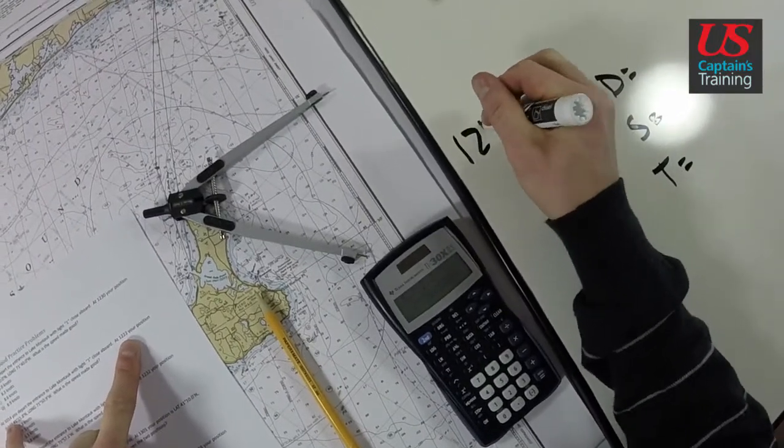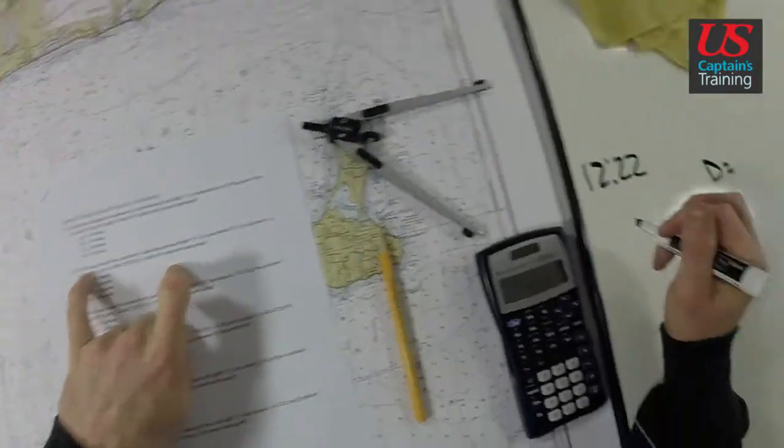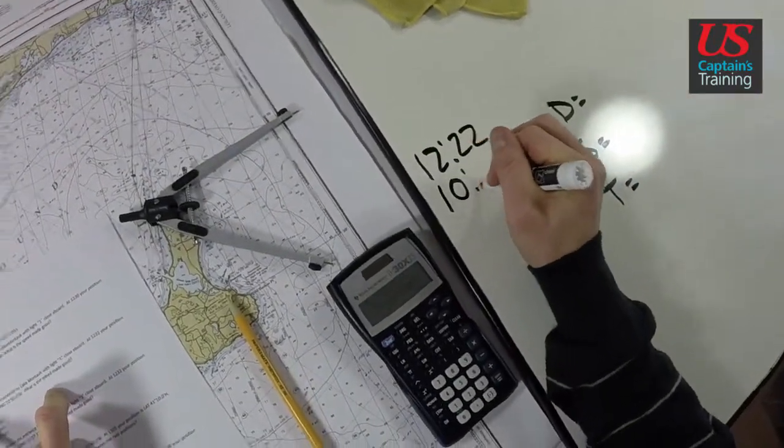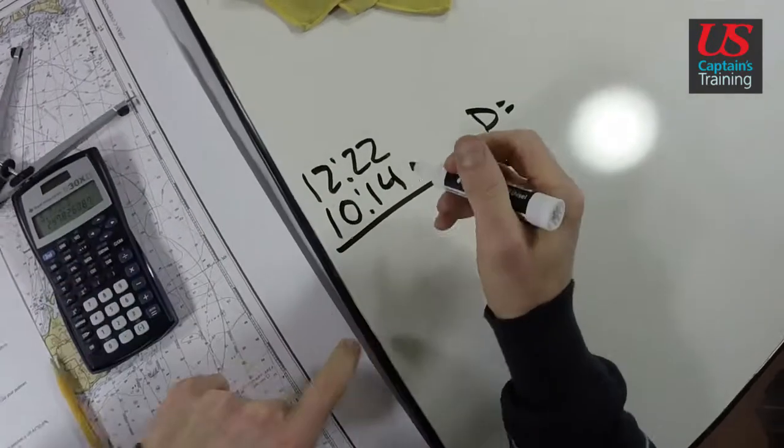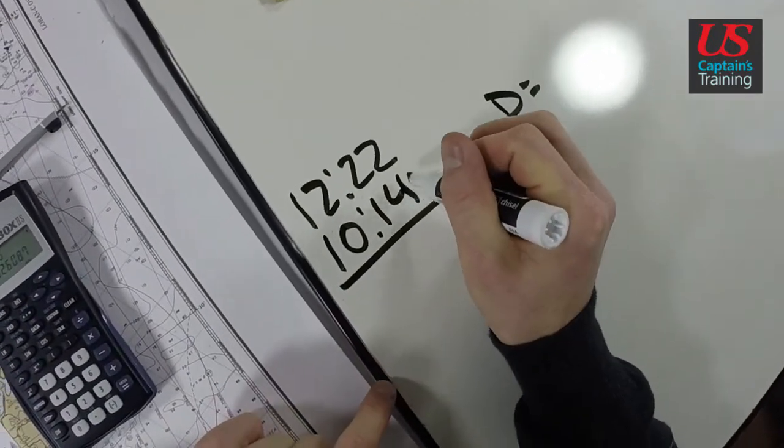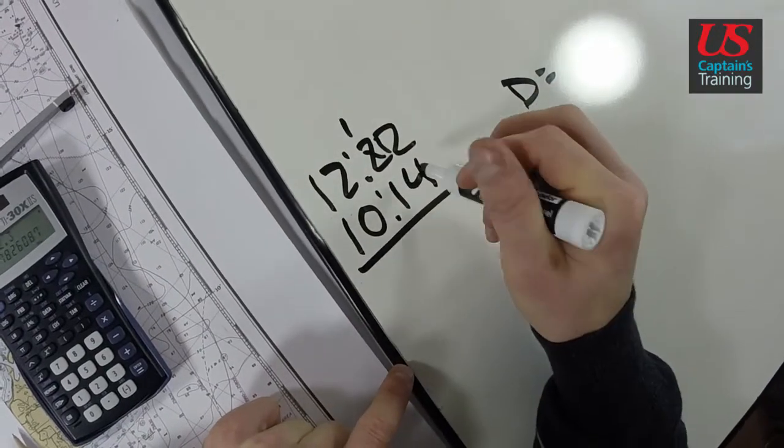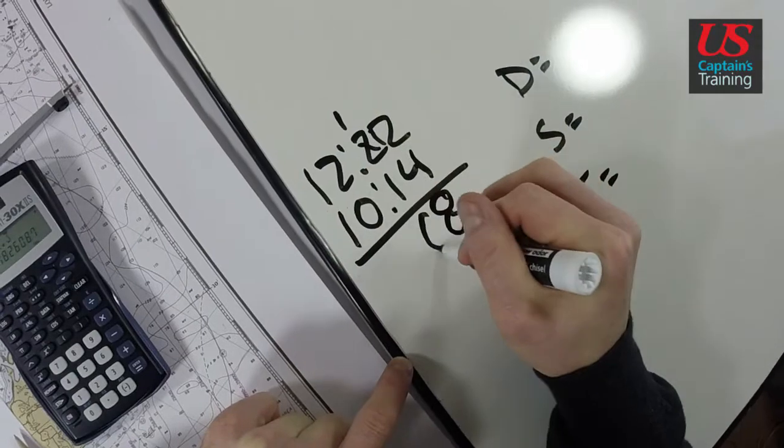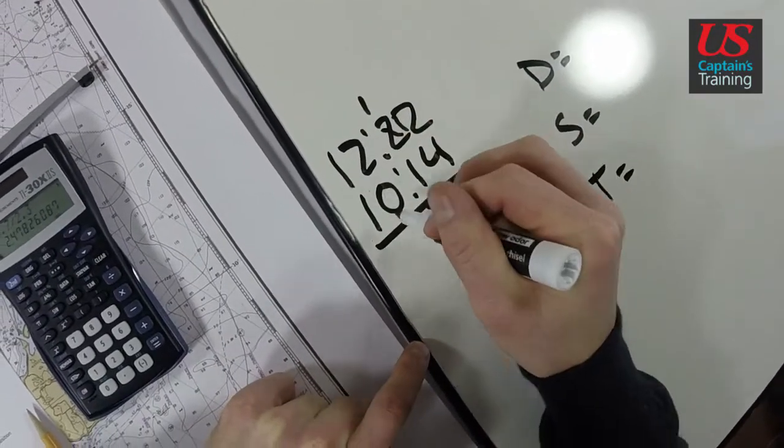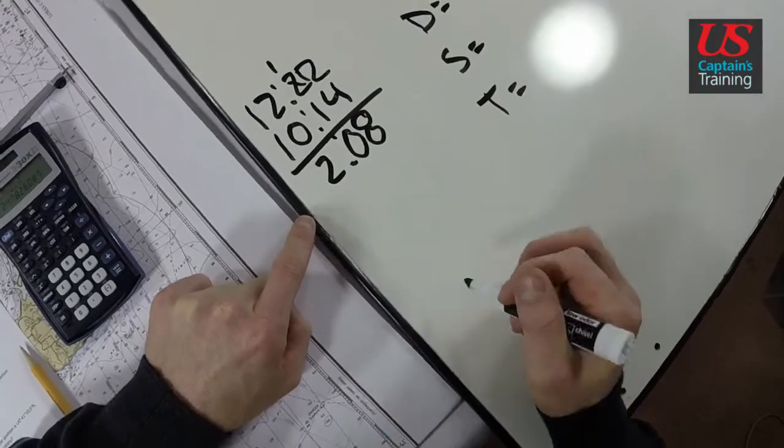So 1222, 12 hours 22 minutes, minus 1014, 10 hours 14 minutes. We subtract these two. We can take 14 away from 22, just going to borrow. Now this is 12 minus 4 is 8, 1 minus 1 is 0. So we have 12 minus 10 is 2. We have 2 hours and 8 minutes.